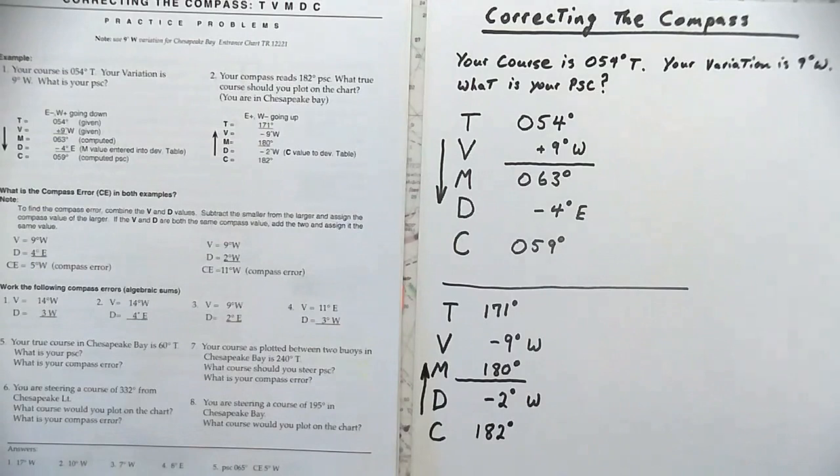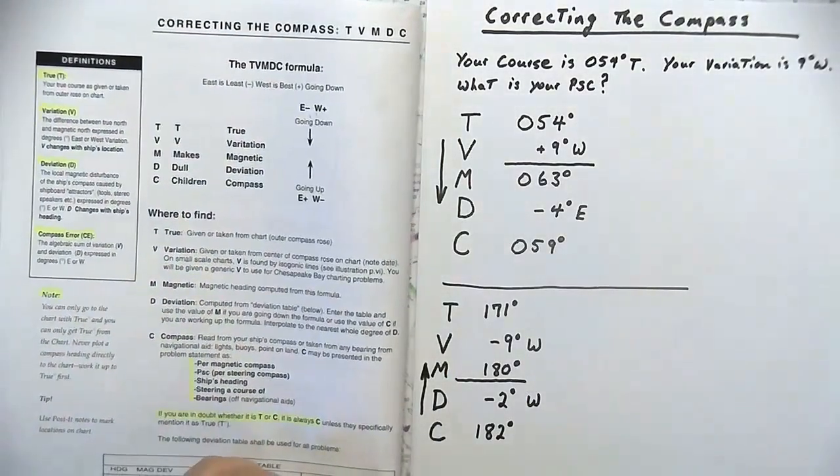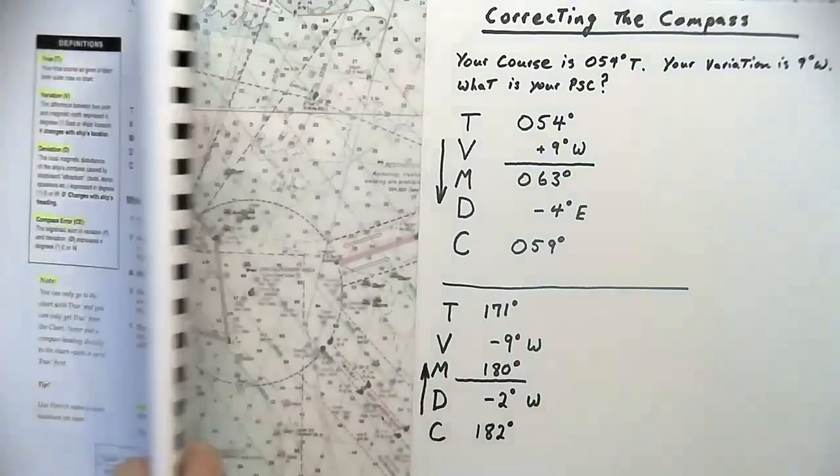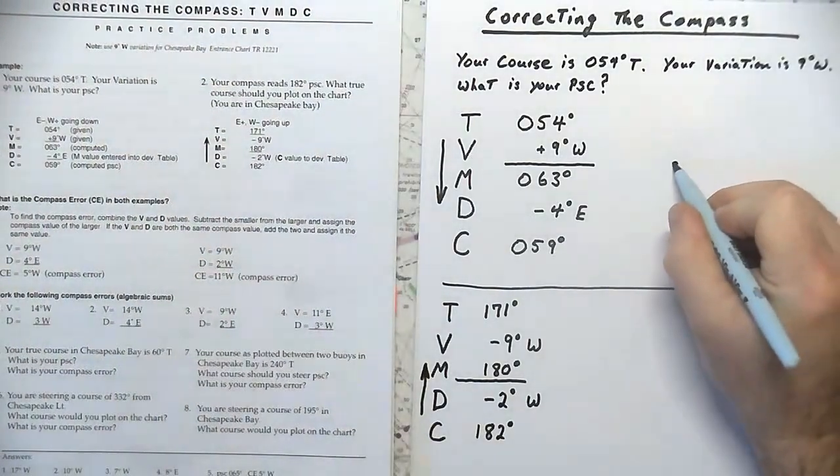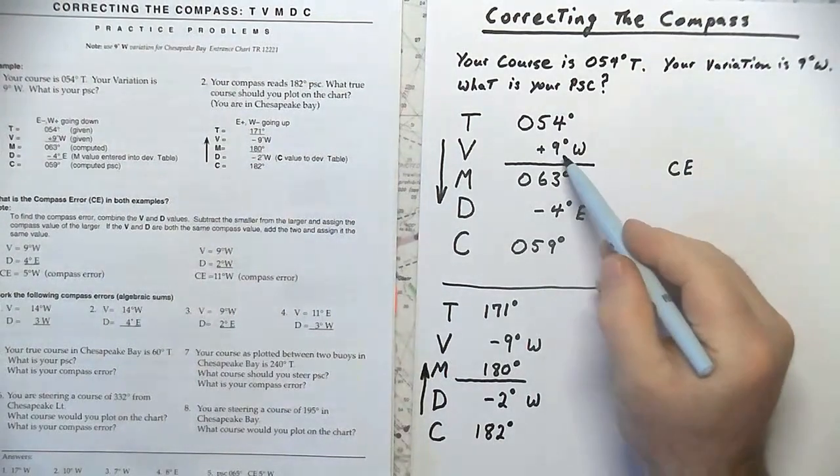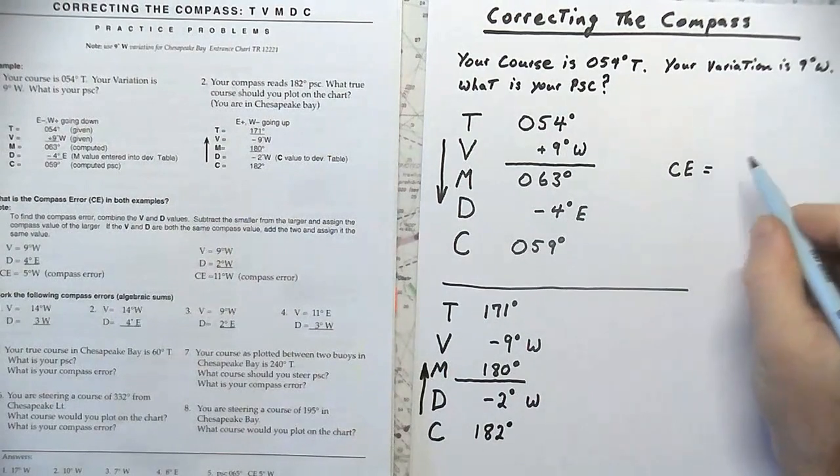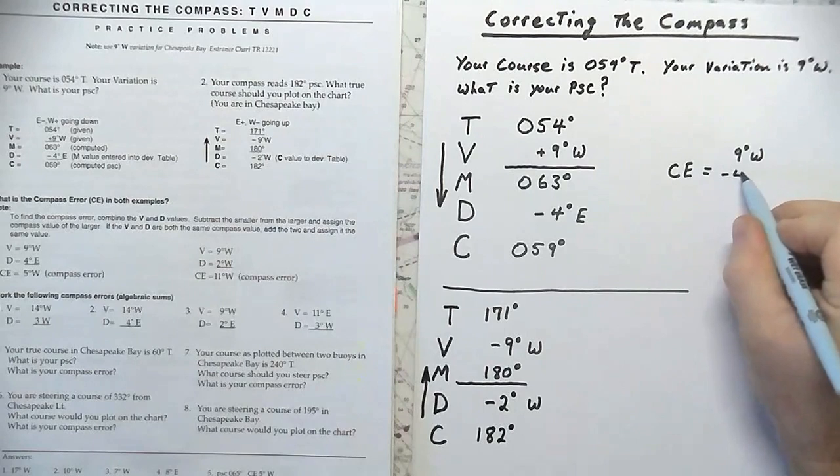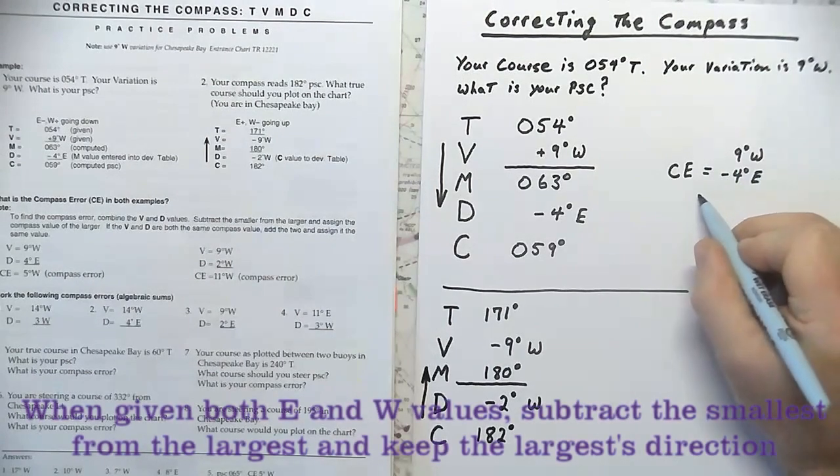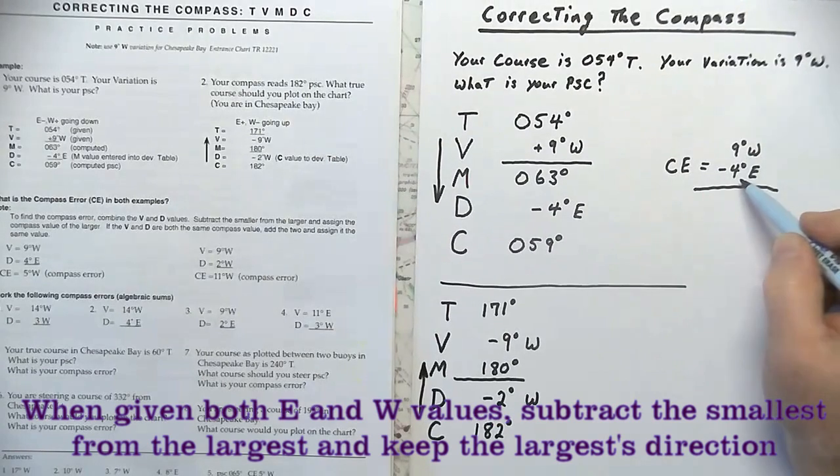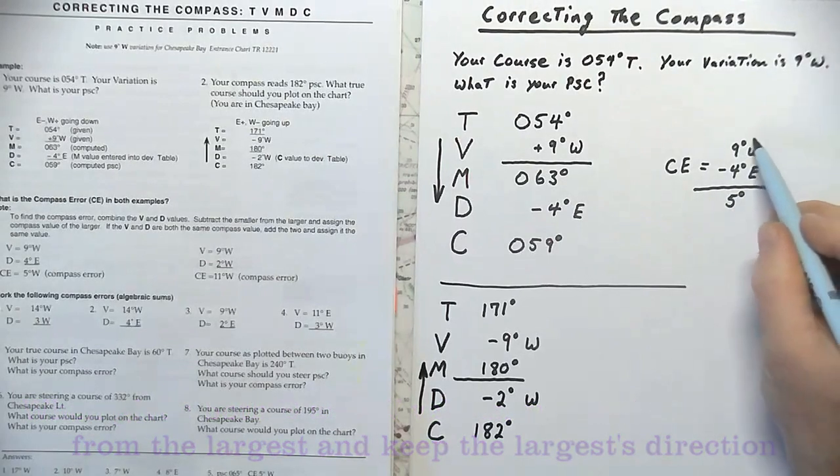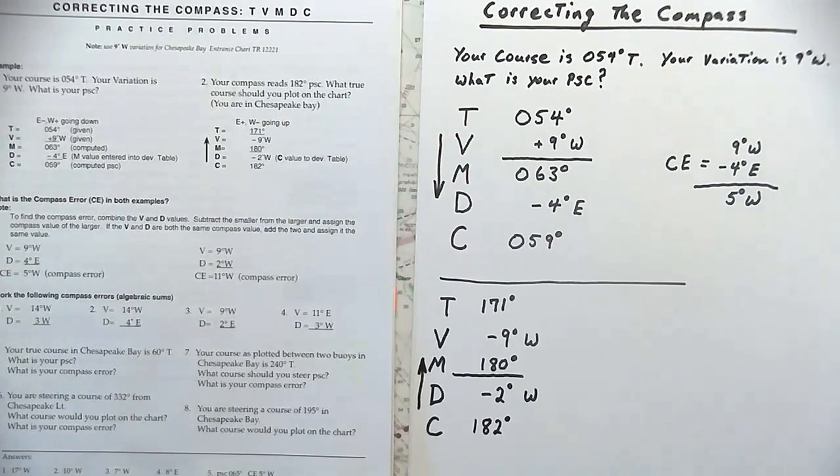One last piece of information that these problems ask for is compass error. Compass error, as we described earlier, is the algebraic sum of variation and deviation expressed in degrees east or west. In both of these problems, compass error is very easily obtained by simply adding our two values, variation and deviation. In this case, we have 9 degrees west with minus 4 degrees east. Since these two values are opposite, we're going to subtract the smaller from the larger, which results in 5 degrees, and we're going to retain the larger's value. So the answer is 5 degrees west.